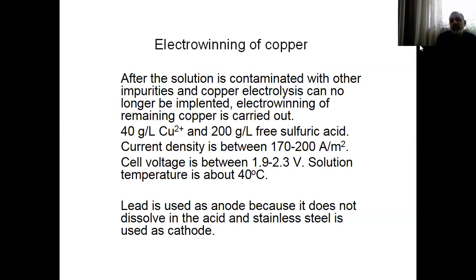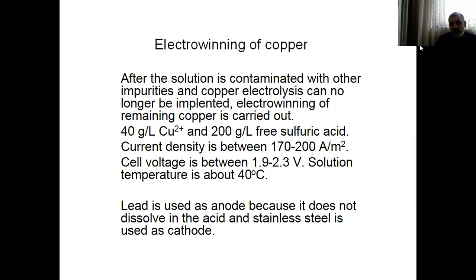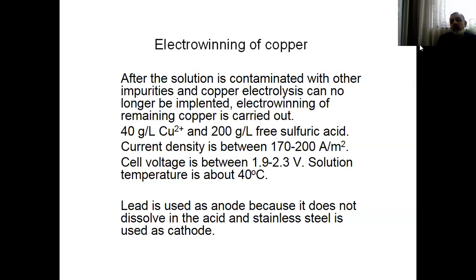The concentration changes depending on the process applied and the plant running this reaction. For about 4 g/L Cu²⁺ and about 200 g/L free sulfuric acid, the current density is between 170 to 200 A/m². The cell voltage is high — 1.9 to 2.3 volts. The solution temperature is about 40°C.